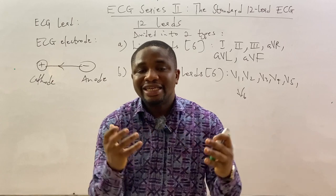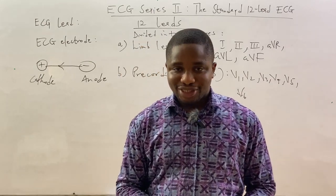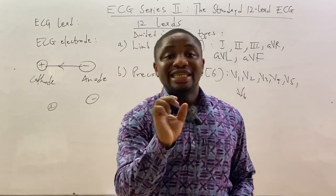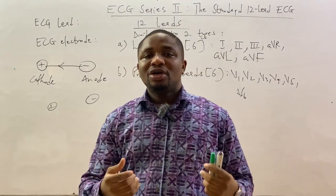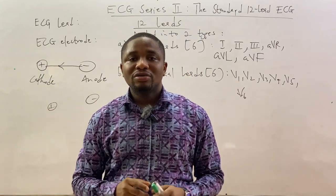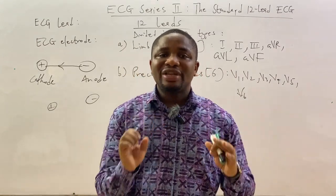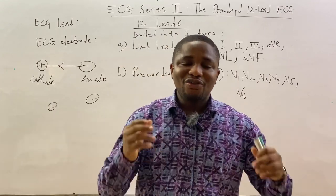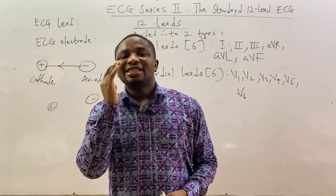So what is an ECG electrode? The ECG electrode is a conductive pad that is attached to the skin to record the electrical activity of the heart. If you have done an ECG before, you realize that they attach a pad onto your skin — that pad is the electrode. There are about 10 of them placed on your skin to analyze the electrical activity of the heart.